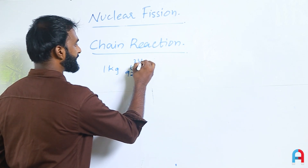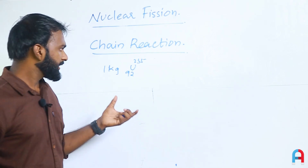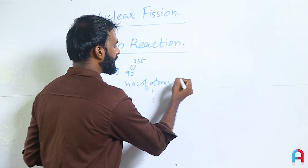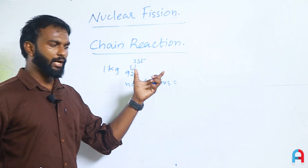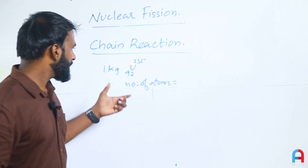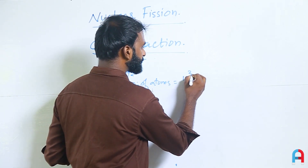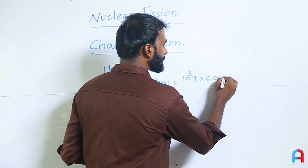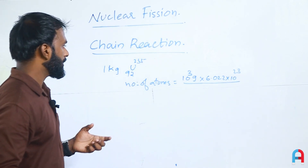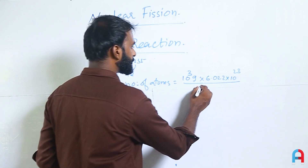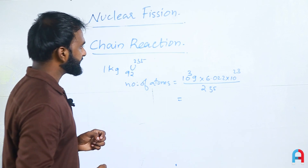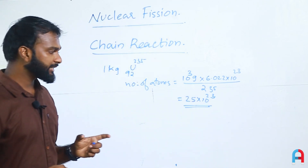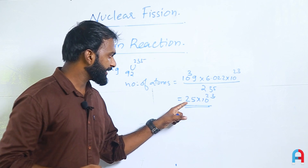For 1 kg of U-235, the number of atoms equals the given mass divided by the molar mass, multiplied by Avogadro's number. That is: 10^3 grams divided by 235, multiplied by 6.022×10^23, which gives approximately 2.5×10^23 atoms in 1 kg of uranium.